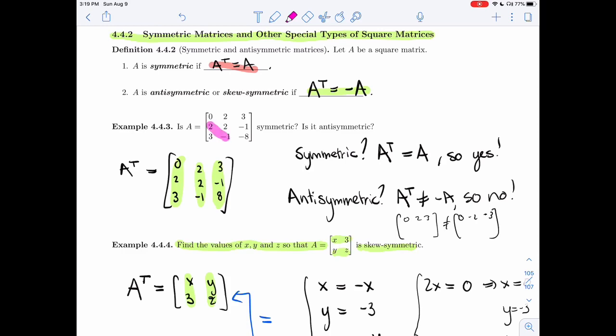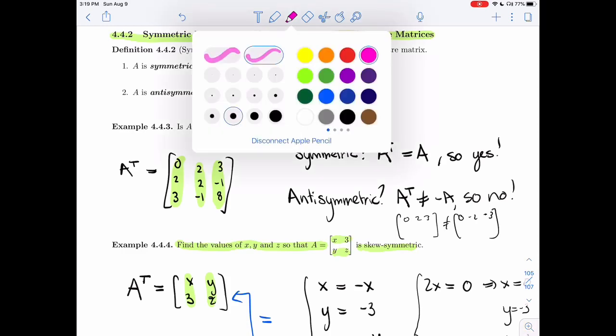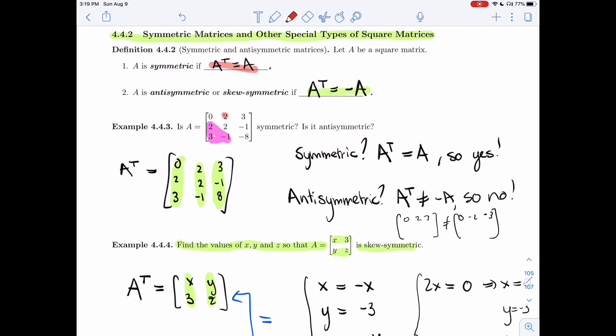So if we look at the lower, we have 2, minus 1, 3. The uppers were red, so that's 2, minus 1, 3 again. And then the diagonal, well, it doesn't matter. Whatever is going to happen when you take the transpose, they're always going to just stay there, so the diagonal can be anything.